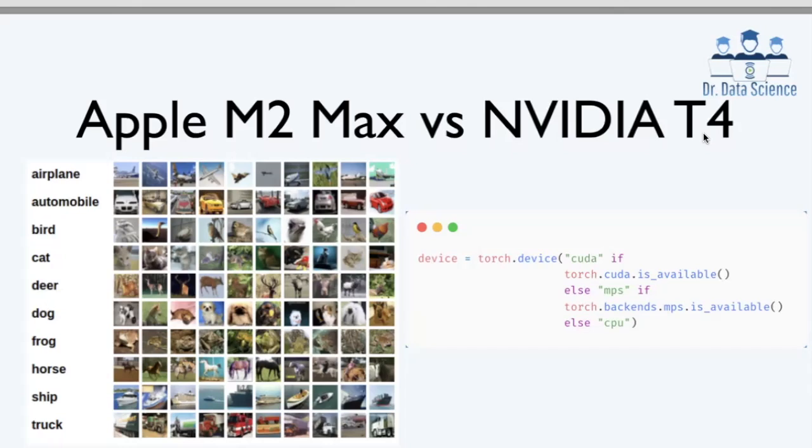For this experiment, we are using the CIFAR-10 dataset. It's a standard dataset with 10 classes of images, each 32 by 32 pixels in size.